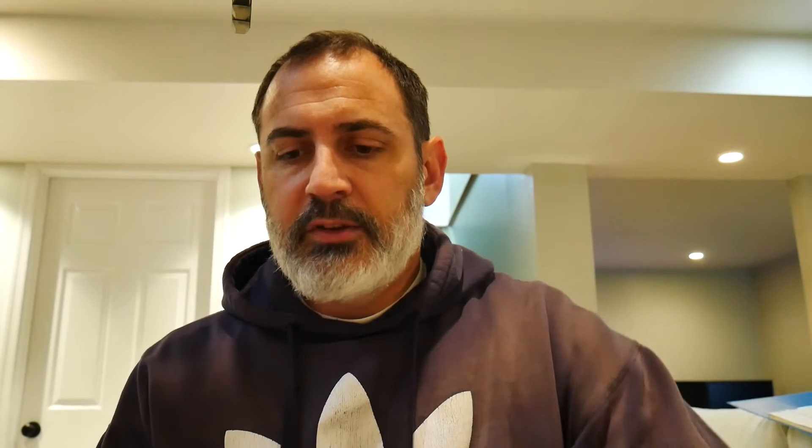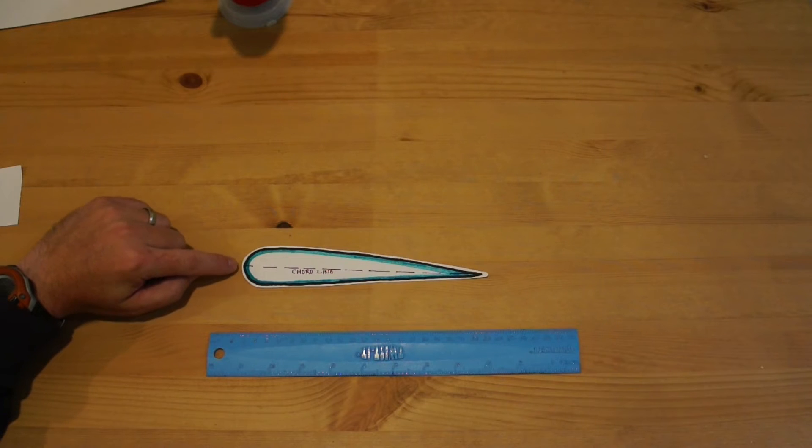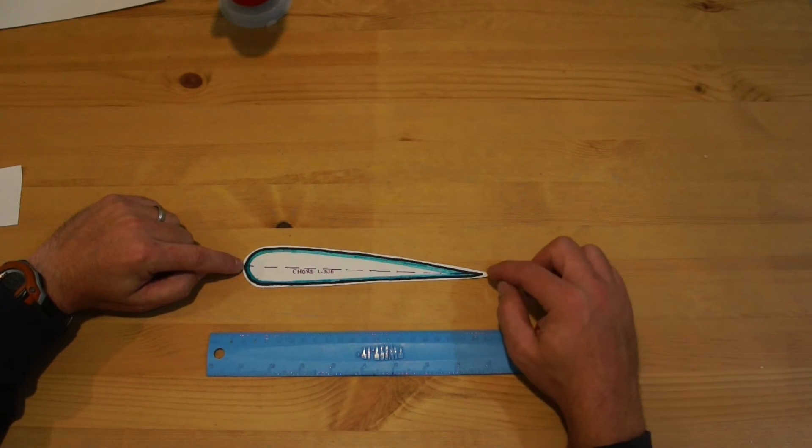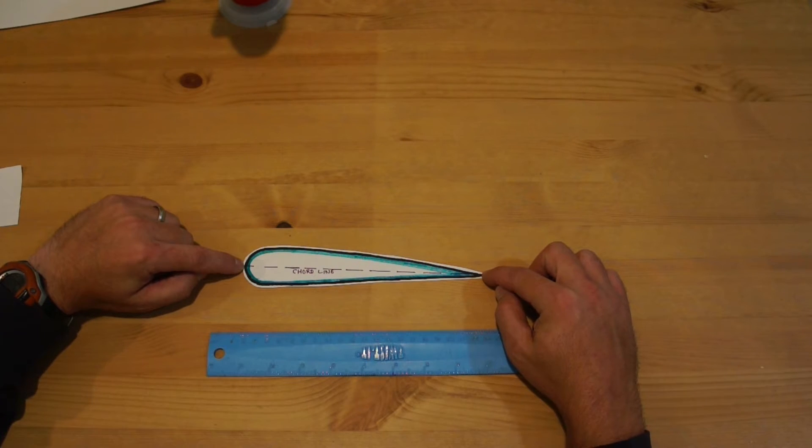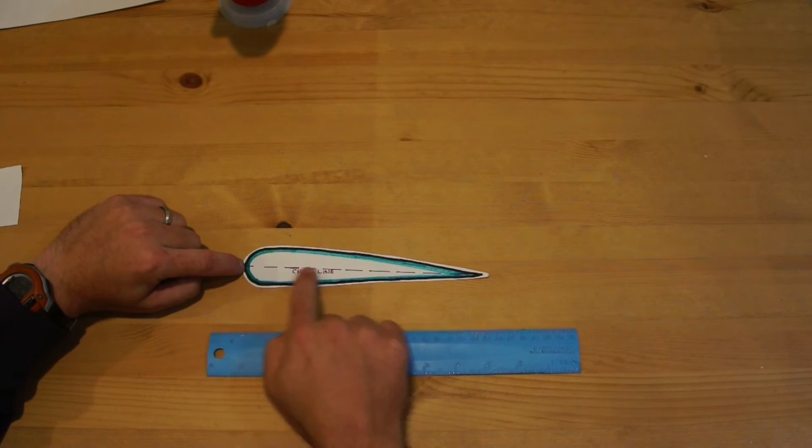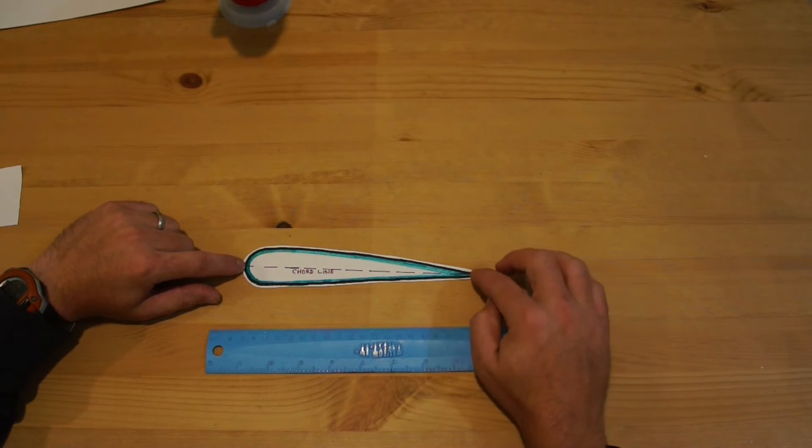If you take a look at this wing, the cross-section of this wing, at the very tip of the wing at the front of it, this is called the leading edge. At the very back of it, this point at the end is called the trailing edge. If you draw a straight line between those two points you get what's called a cord line.